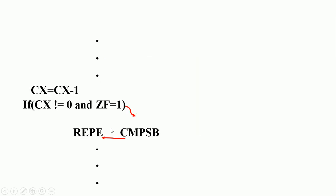Repeat equal works like loop equal: after execution of compare string byte, it decrements CX by 1. If CX is not equal to 0 AND zero flag is set — when both conditions are true — it goes back and repeats. When either condition is false — either CX equals 0 or zero flag is reset — it comes out of the loop. Repeat equal means: if both characters are equal, keep executing compare string byte.